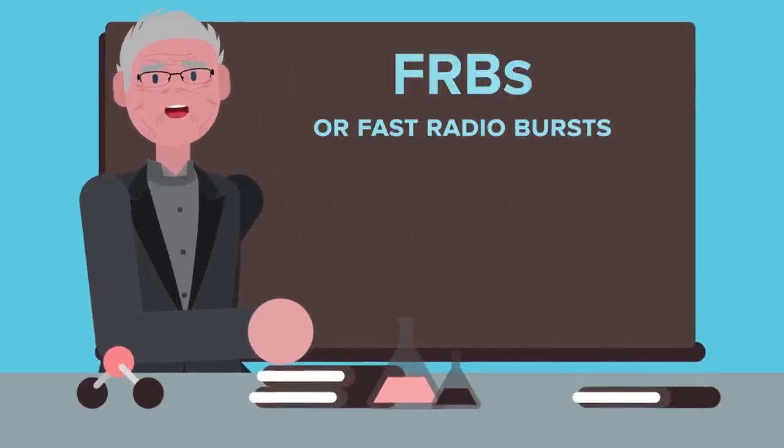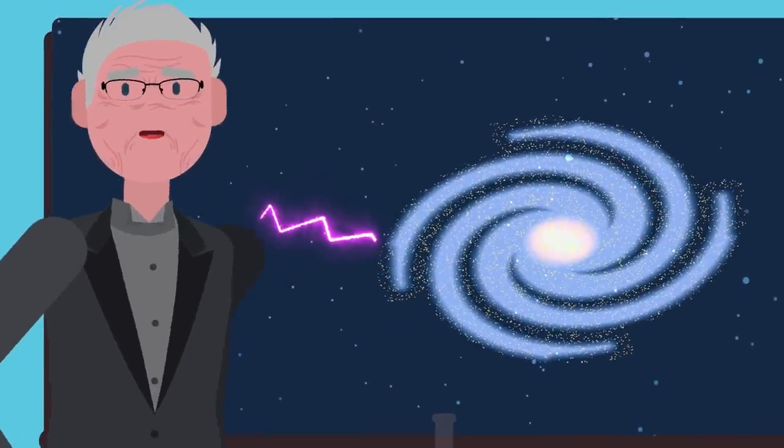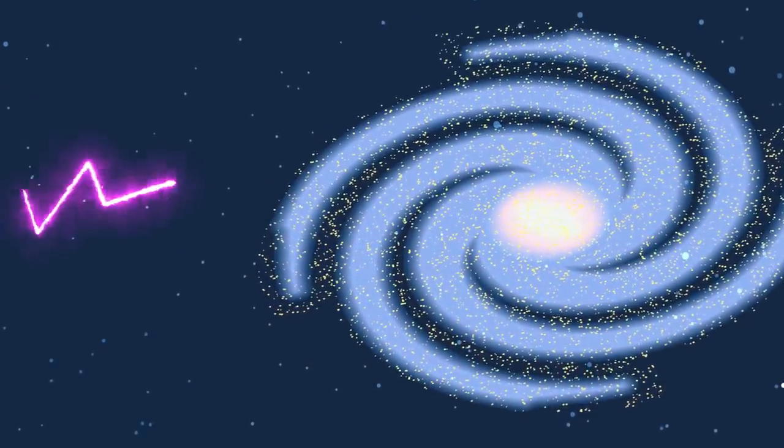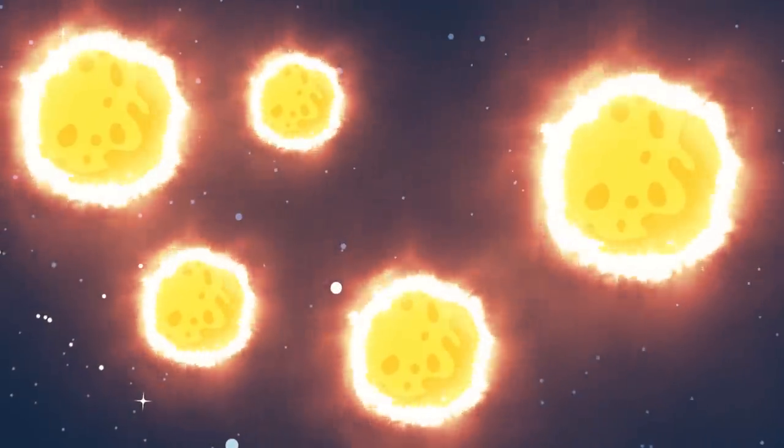FRBs, or fast radio bursts, are sudden large pulses of radiation that erupt from somewhere outside of our galaxy. Though they last for fractions of a second, they expend an immense amount of energy, maybe as much as hundreds of millions of suns.